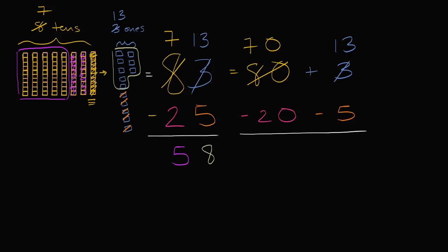And now we were ready to subtract. 13 minus five is eight, and 70 minus 20 is 50. So we were left with 50 plus eight, or 58.